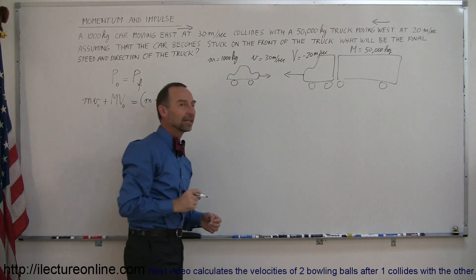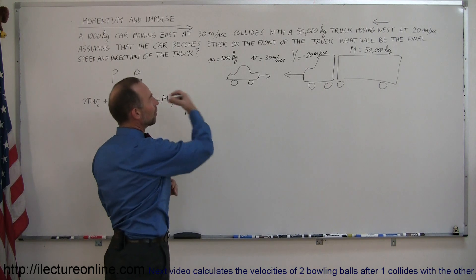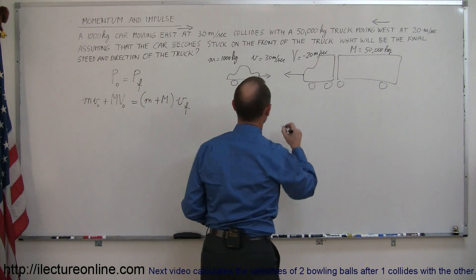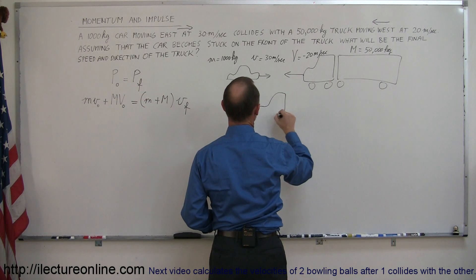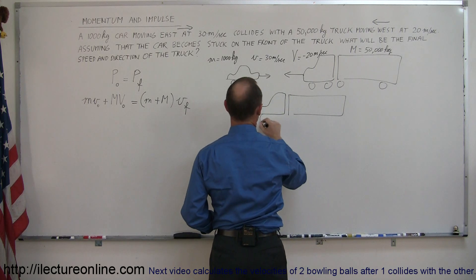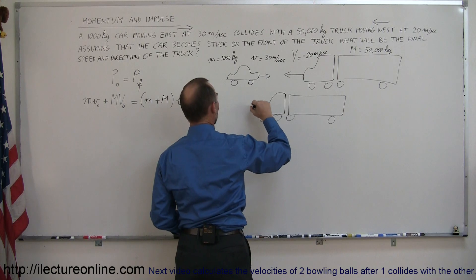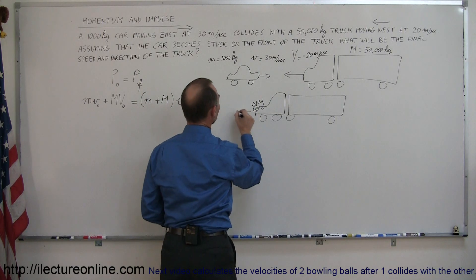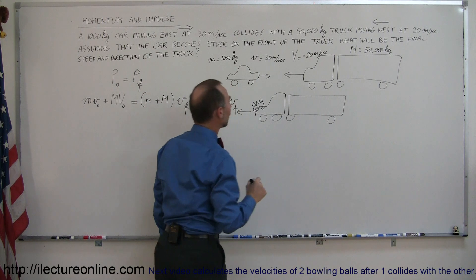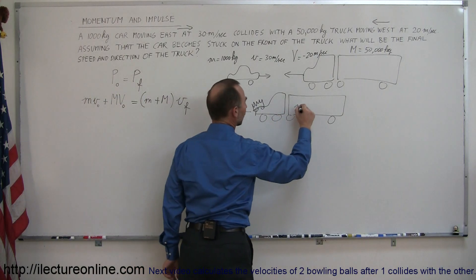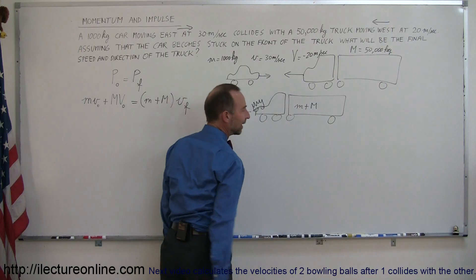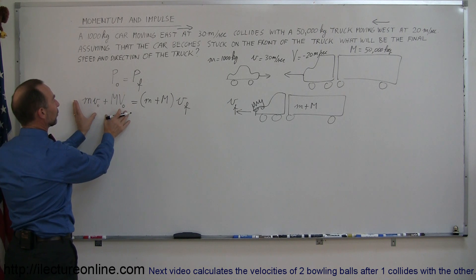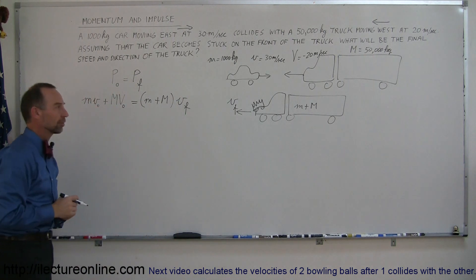It doesn't take much thinking to assume that after the collision both will be moving to the left — the truck is much bigger than the car. After the collision the truck will still be moving to the left, probably slower than before, with the car stuck on its hood. Both move left with some final velocity, combining their two masses. That's the before and after picture.